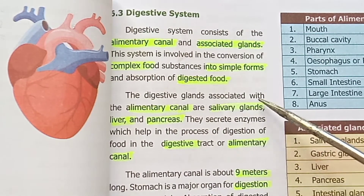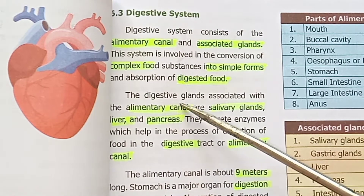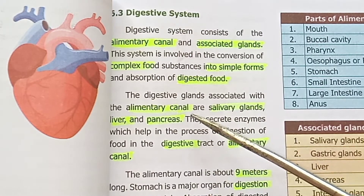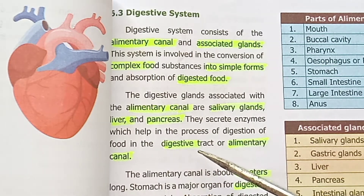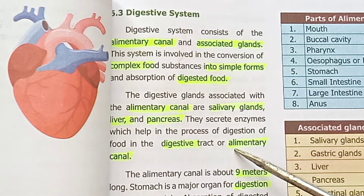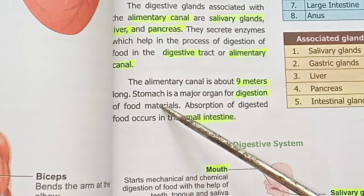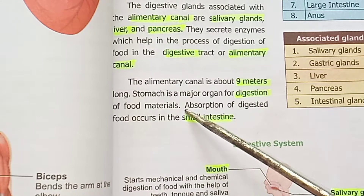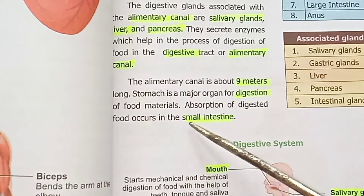The digestive glands associated with the alimentary canal are the salivary glands, liver, and pancreas. They secrete enzymes which help in the process of digestion of food in the digestive tract. The alimentary canal is about 9 meters long and is a major organ for digestion. The absorption of digested food occurs in the small intestine.